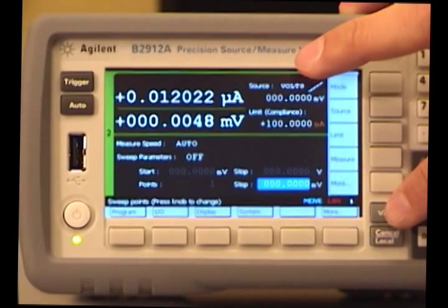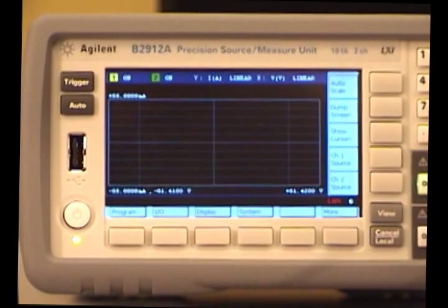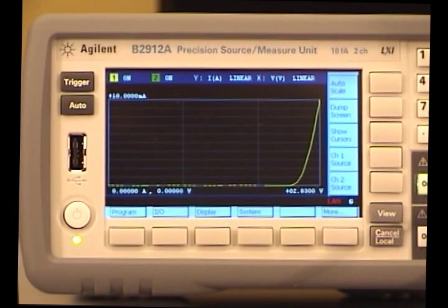Change the view to graph view, press the trigger, apply the auto scale, and you can see the IV characteristics of the LED here.